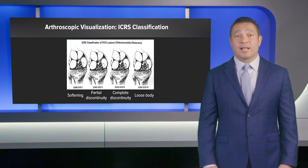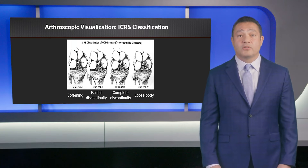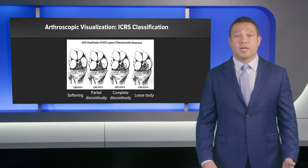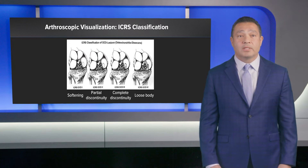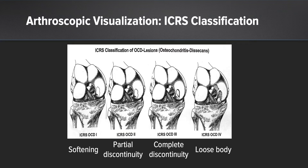The ICRS classification is also used; this is done arthroscopically. In grade one there's softening of the cartilage. In grade two there's partial discontinuity. In grade three there's complete discontinuity. And in grade four there's a loose body present.